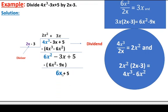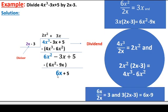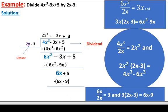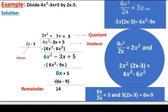The remaining dividend is 6x plus 5. Divide 6x by 2x to get 3 — write 3 as the next quotient term. Multiply 3 by the divisor to get 6x minus 9. Subtract 6x minus 9 from 6x plus 5: the difference is 14, which is the remainder. Since the degree of the remainder is less than the degree of the divisor, we stop. The quotient is 2x² plus 3x plus 3 with remainder 14.